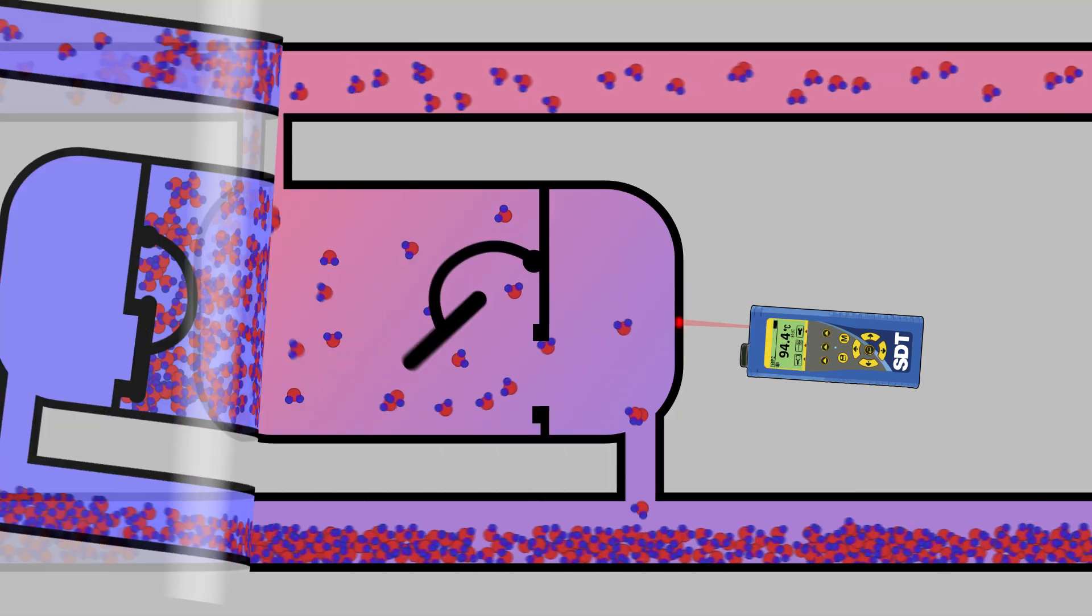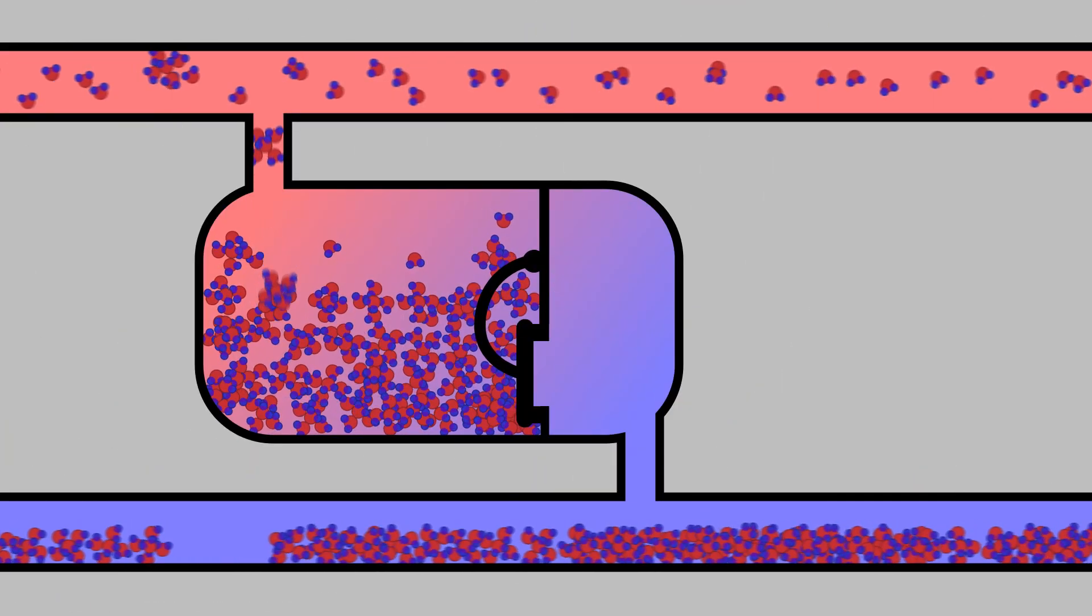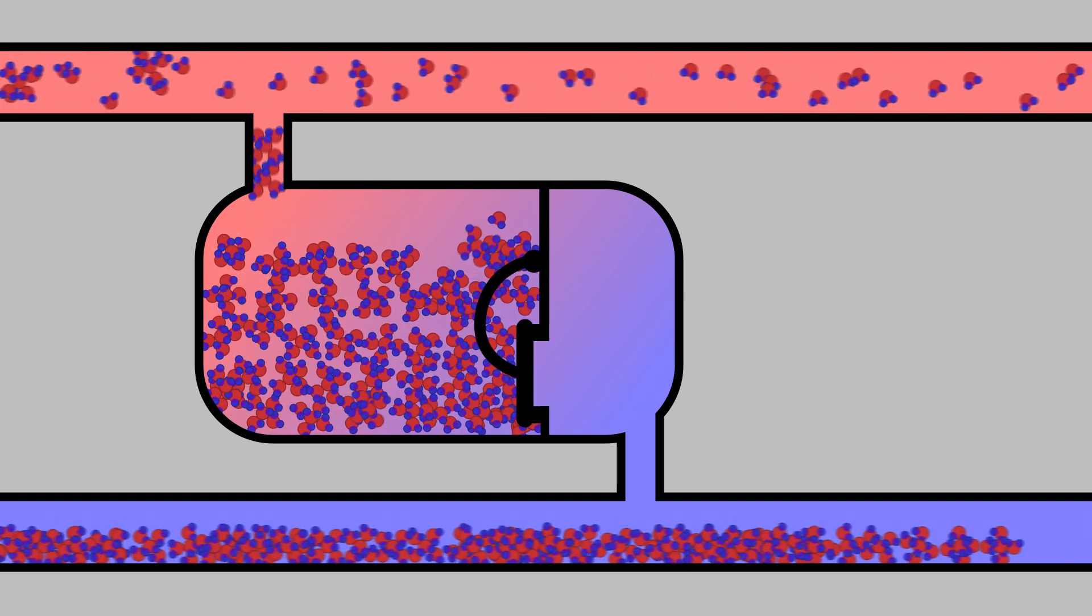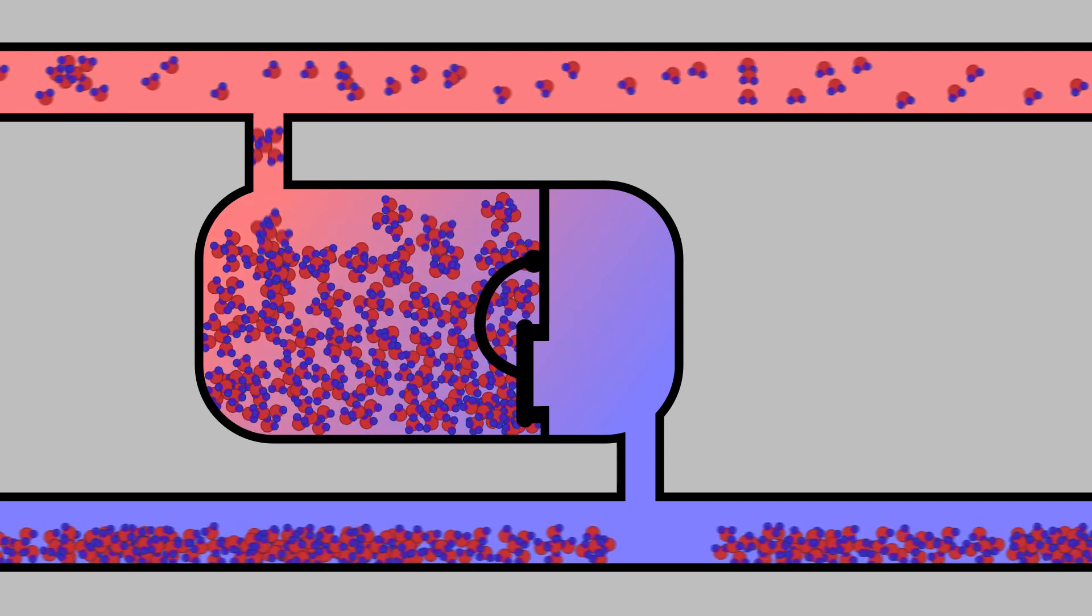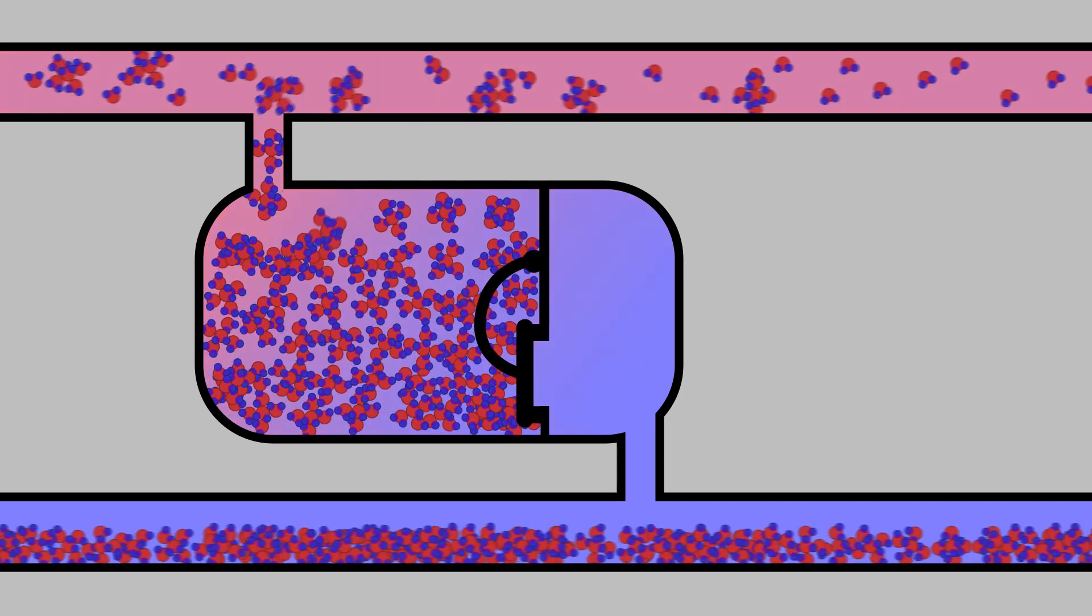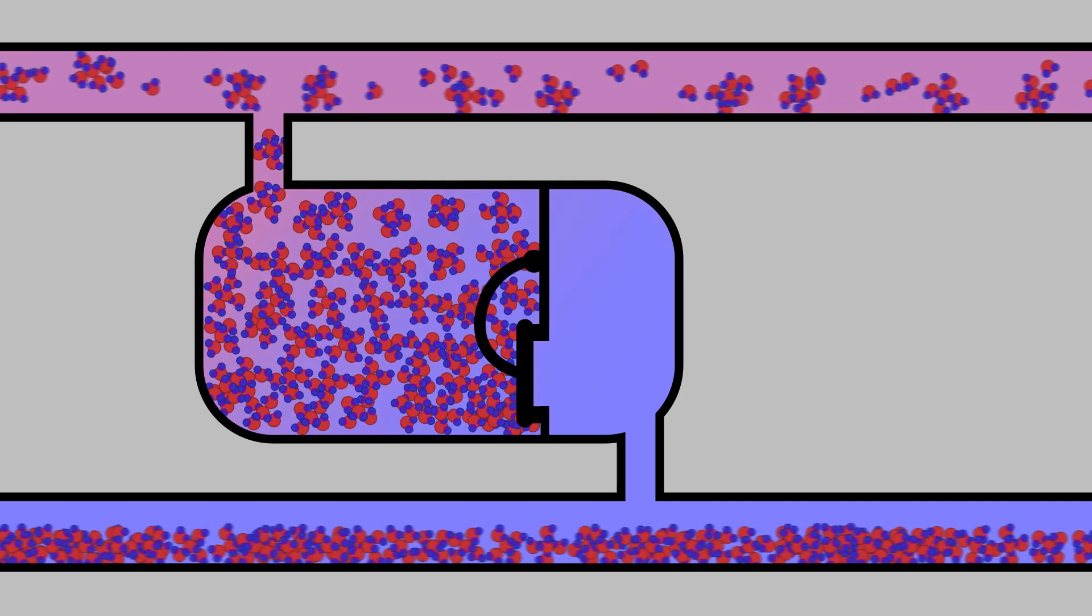When a steam trap has failed in the closed position, condensate accumulates upstream. This results in a drastic drop in the installation's energy performance that affects the quality and efficiency of the process. Accumulation of condensate will frequently result in water hammer.